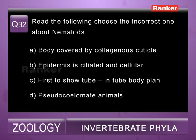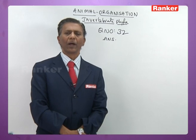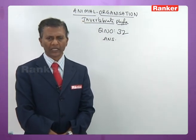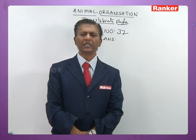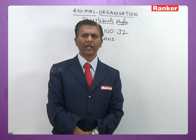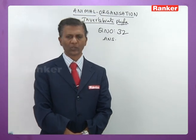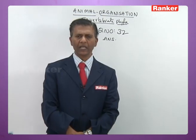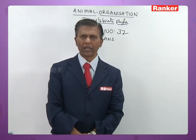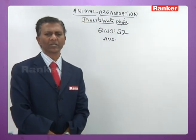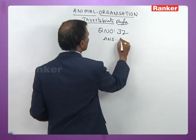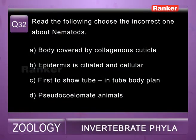Question thirty-two: read the following and choose the incorrect one about nematodes — a) body covered by collagenous cuticle (correct), b) epidermis is ciliated and cellular (wrong — epidermis is not ciliated but is syncytial), c) faster to show tube-in-tube organization (correct), d) pseudocoelomate animal (correct). Since the question asks for the incorrect option, thirty-second question correct answer is b.